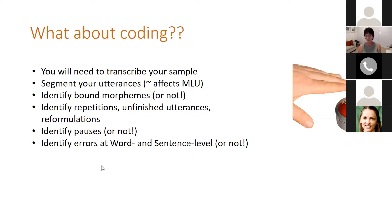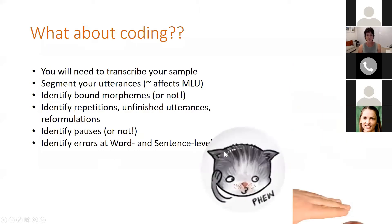We want to identify repetitions, unfinished utterances, and reformulations to get a sense of children's utterance formulation difficulties and their ability to plan — it tells us a little bit about cognitive load. We may want to identify pauses, or not; if you're not interested, let's not code them and waste time. We may want to identify errors at word and sentence level — or not — because sometimes by year three or four of schooling, errors at word and sentence level aren't really what affects a child's communicative ability to get the message across.